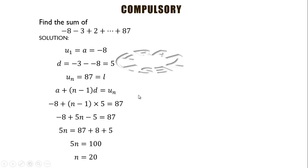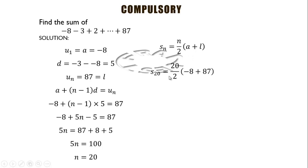Now we will use the formula for the sum of terms. We have the formula n/2 times (2a + (n−1)d), but since we know the first term, the last term, and the number of terms, we use the simpler formula. Substituting: first term is −8, last term is 87, and number of terms is 20, that gives us the sum of the series to be 790.